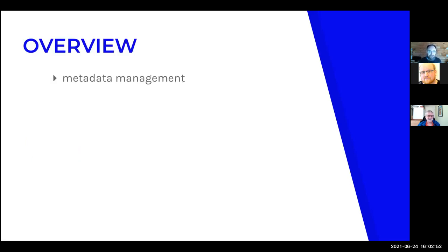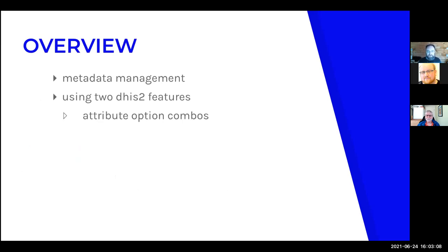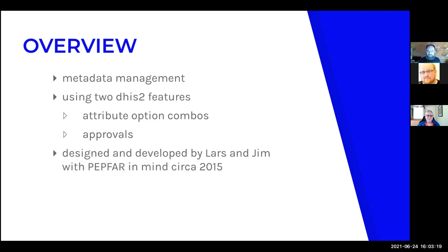So what are we talking about today? We're talking about metadata management — how to manage the metadata in your system, the information about the information in your system. We're going to talk about two DHIS2 features used for metadata management: the first is attribute option combos, and the second is approvals.